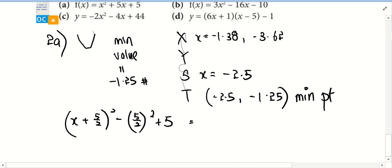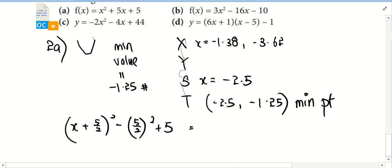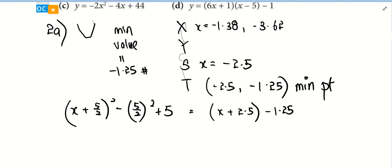All right, now I'm trying the completing the square method. Should be negative 1.25. Is it negative (5/2)² + 5? Can you press for me? It should be negative 6.25 plus 5. So this is completing the square method. Can I find straight away the line of symmetry? Yes.